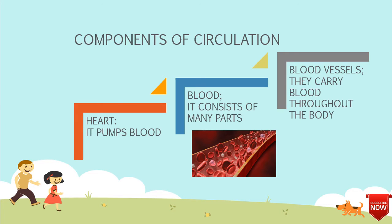Now, blood is made up of red blood cells, which are the red cells, and white blood cells, which are the whitish cells. And the platelets, and the liquid part is the plasma.